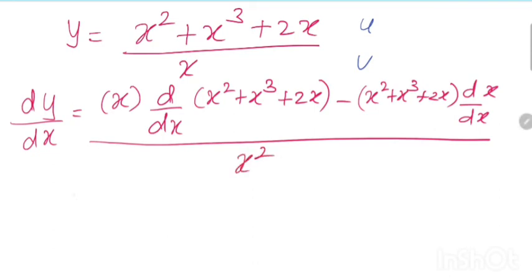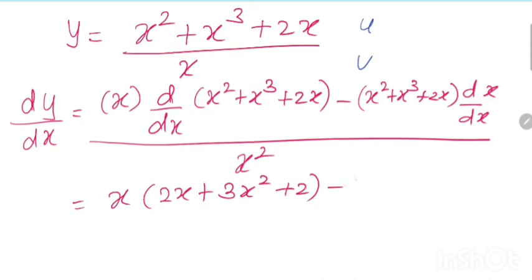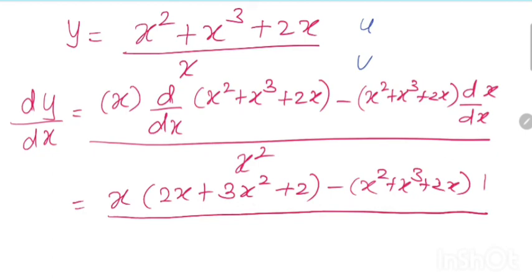The derivative of x square is 2x, x cube is 3x square, and 2x is 2. Minus x square plus x cube plus 2x, and dx by dx gives 1, divided by x square. Simplify and write the final answer in the comment box below this YouTube video. Thank you for watching.